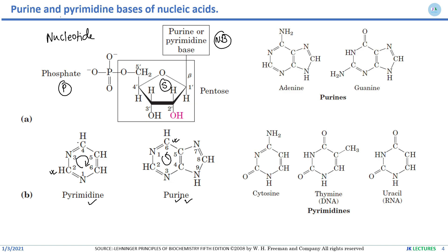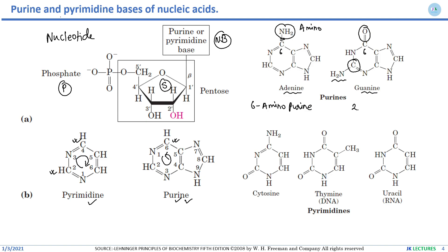Looking at the structure of adenine — the sixth carbon carries an amino group, so the IUPAC nomenclature of adenine is 6-aminopurine. For guanine, the second position is occupied by an amine group and the sixth position by an oxo group, so the IUPAC nomenclature is 2-amino-6-oxopurine.